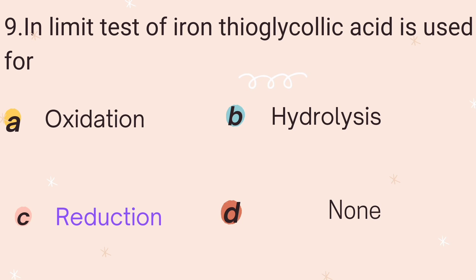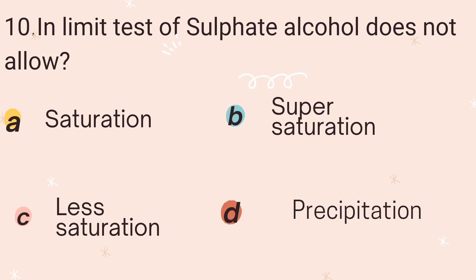Tenth question: In the limit test of sulfide, what does sulfide-free alcohol prevent? The reagents in this test include barium chloride, sulfide-free alcohol, and potassium sulfide. The options are saturation, supersaturation, less saturation, and precipitation. The correct answer is Option B — supersaturation. Sulfide-free alcohol is added to prevent supersaturation and to keep the turbidity uniform. Thanks for watching — please subscribe and press the bell button.